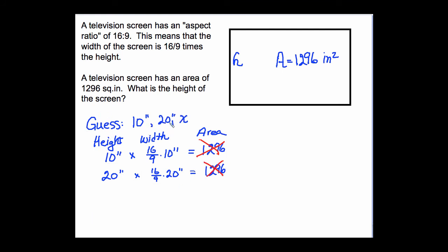Now that we've guessed 10 and 20, let's guess X. If our height is X, then our width is 16 ninths times X. And if we multiply these two together, the area should be 1296 square inches. And there's our equation.